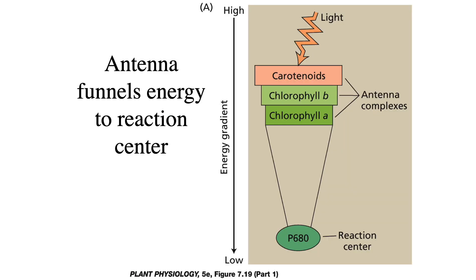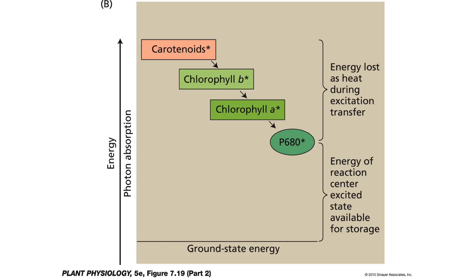In this figure, we can see how the antenna complexes work. Light is absorbed in many wavelengths by carotenoids, chlorophyll B, and chlorophyll A. These are all organized to funnel that energy by resonance energy transfer to the P680 reaction center, moving from higher energy wavelengths down to the lower P680 reaction center. Another view shows how photons captured by carotenoids can be passed to chlorophyll B, then to chlorophyll A, and then transferred to the P680. Note that during each transfer, a little bit of energy is lost as heat.